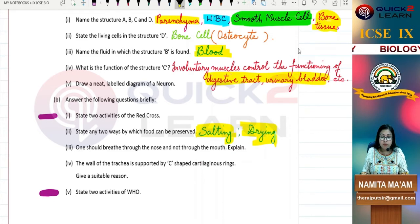One should breathe through the nose and not through the mouth. Why? Because when we breathe through the nose, the air is filtered, warmed, and moistened before entering the lungs.